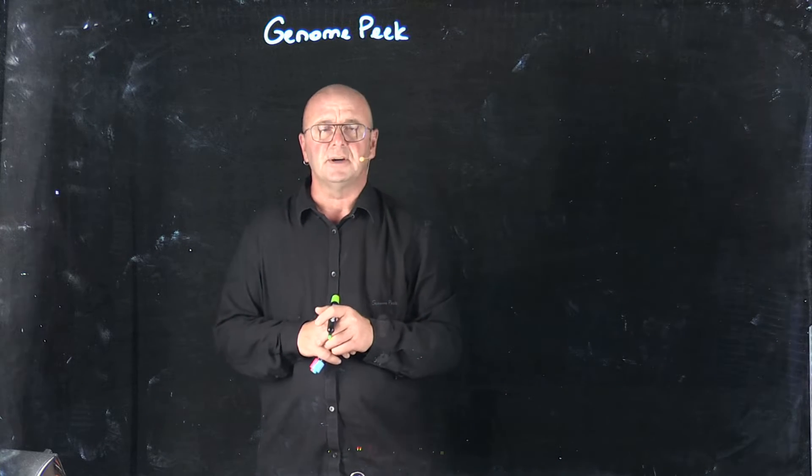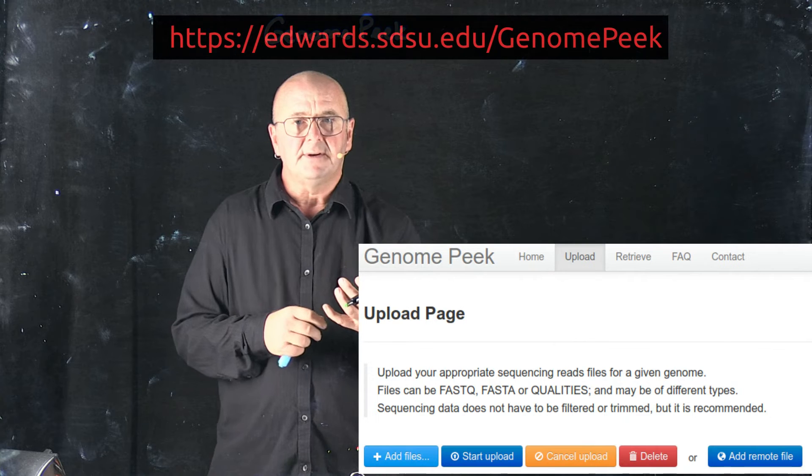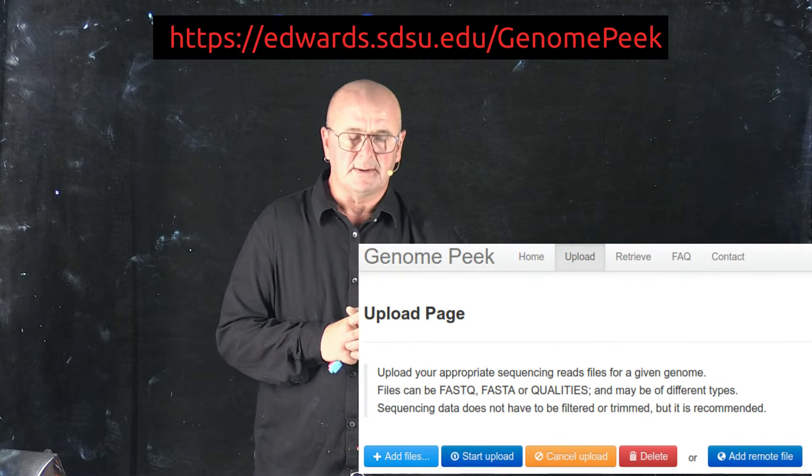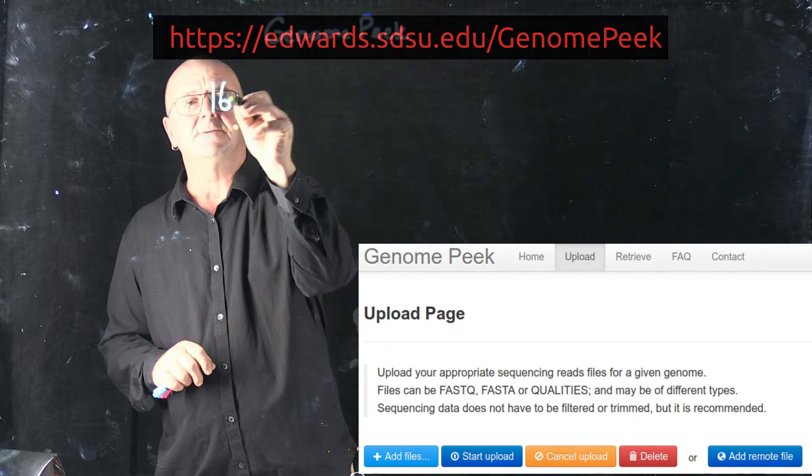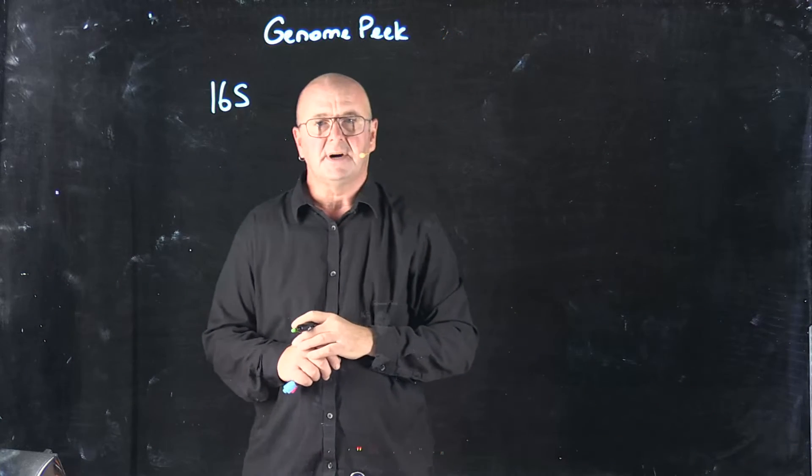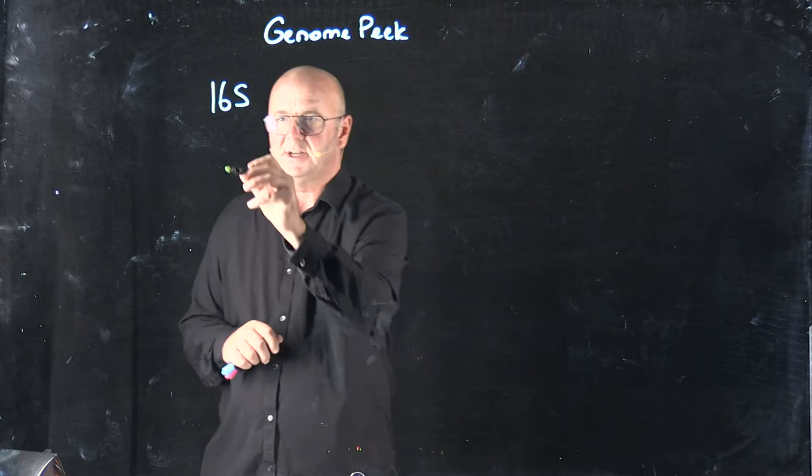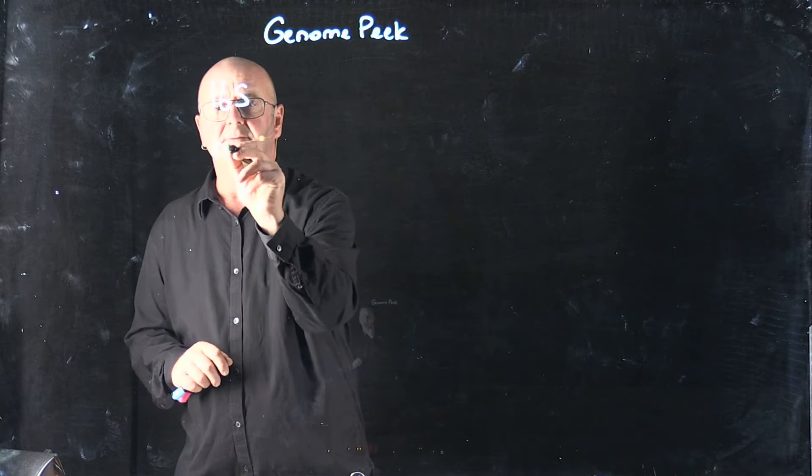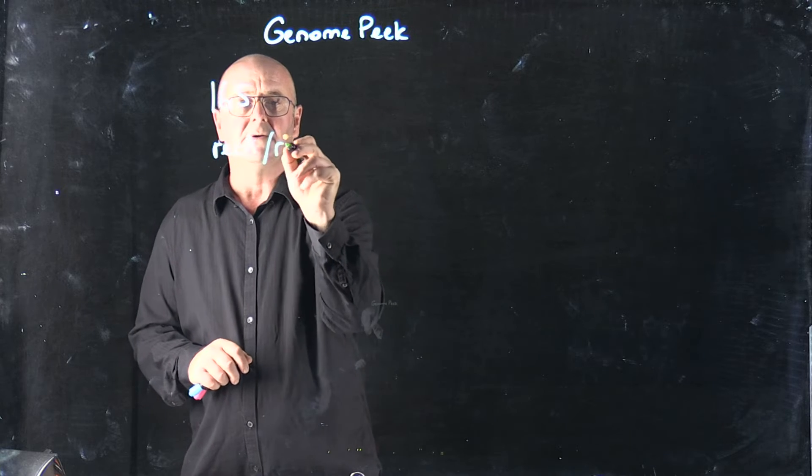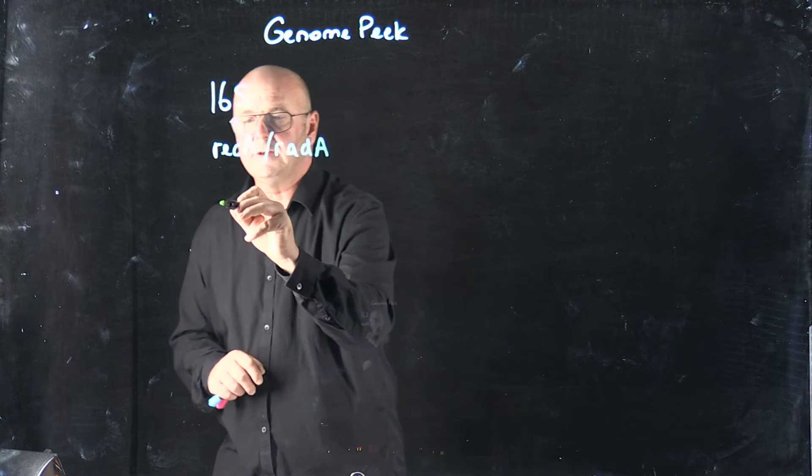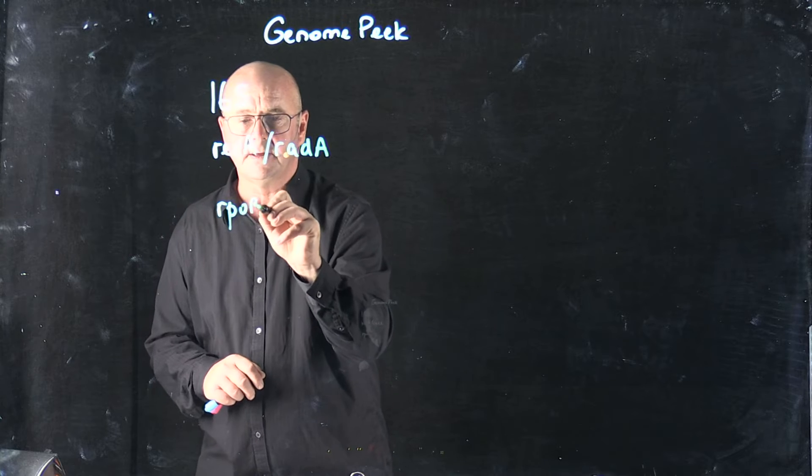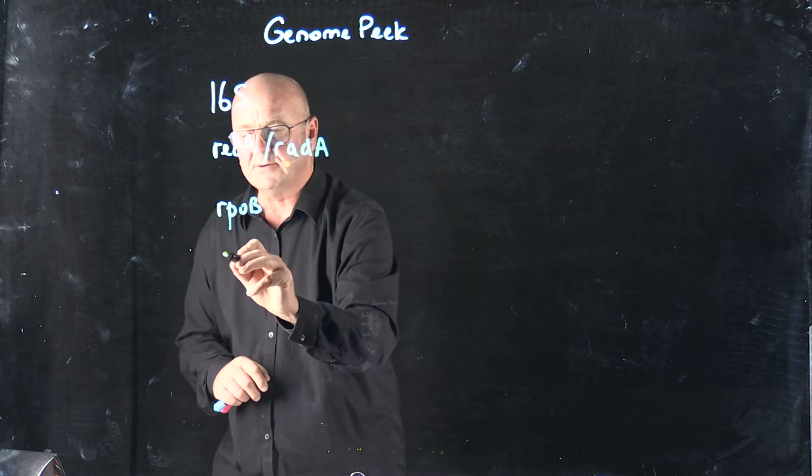The way that GenomePeek works is that you upload your DNA sequence to our website, and we compare your sequences to several marker genes. We use the 16S gene, we use the RecA or RadA recombinase, we use rpoB, and we use GroEL.